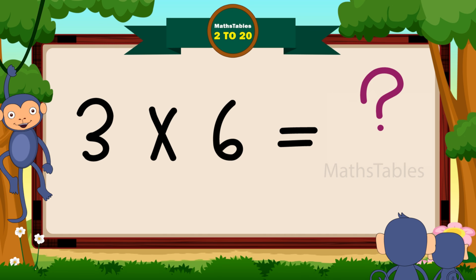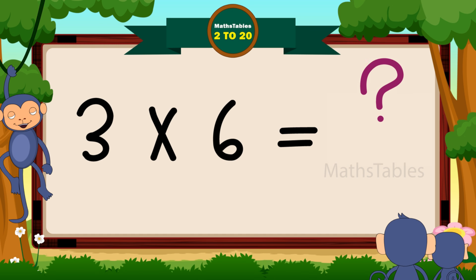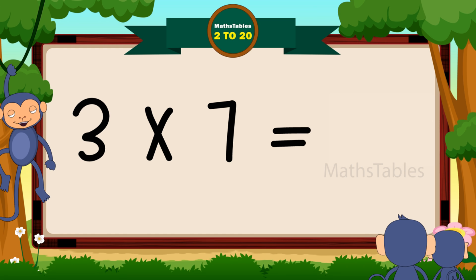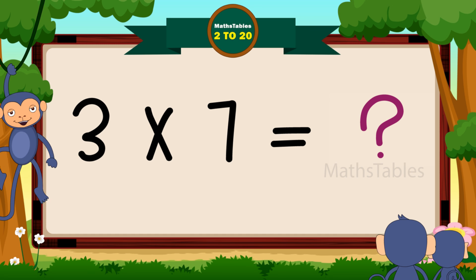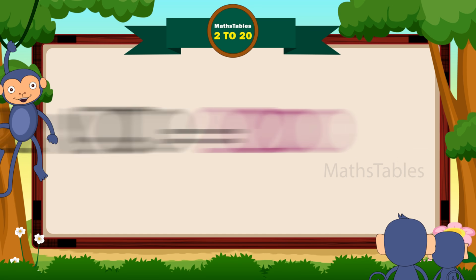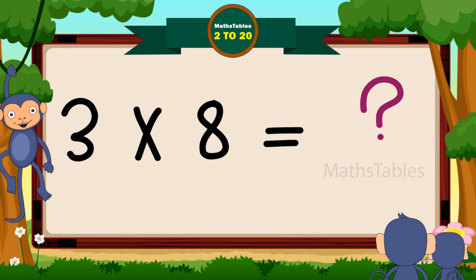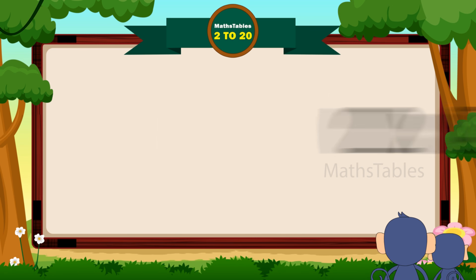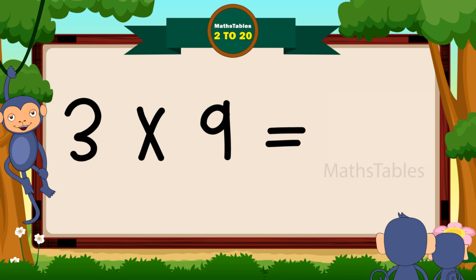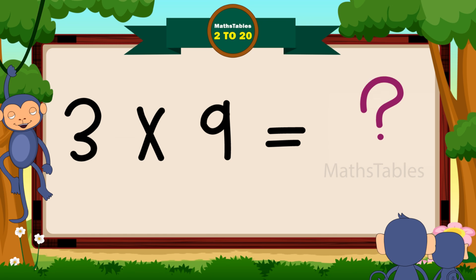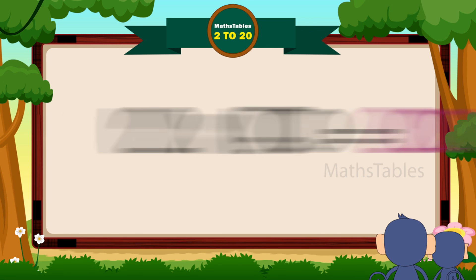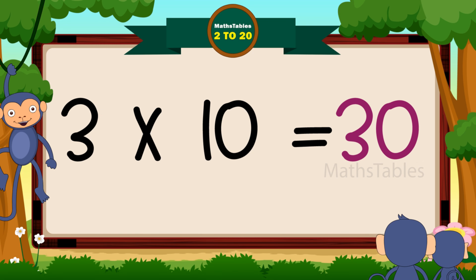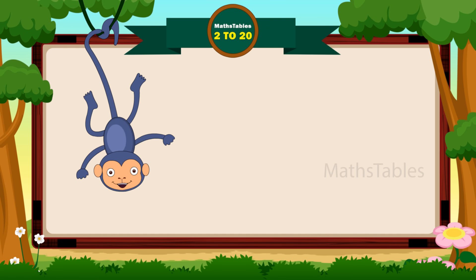Three sixes are eighteen. Three sevens are twenty-one. Three eights are twenty-four. Three nines are twenty-seven. Three tens are thirty. Three tens are thirty.